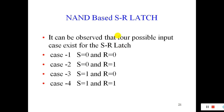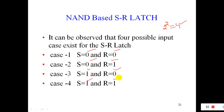The NAND-based SR latch has four conditions because there are two inputs, giving four possible combinations. The four cases are: Case 1 — S=0, R=0; Case 2 — S=0, R=1; Case 3 — S=1, R=0; and Case 4 — S=1, R=1. We will analyze the truth table for each case.